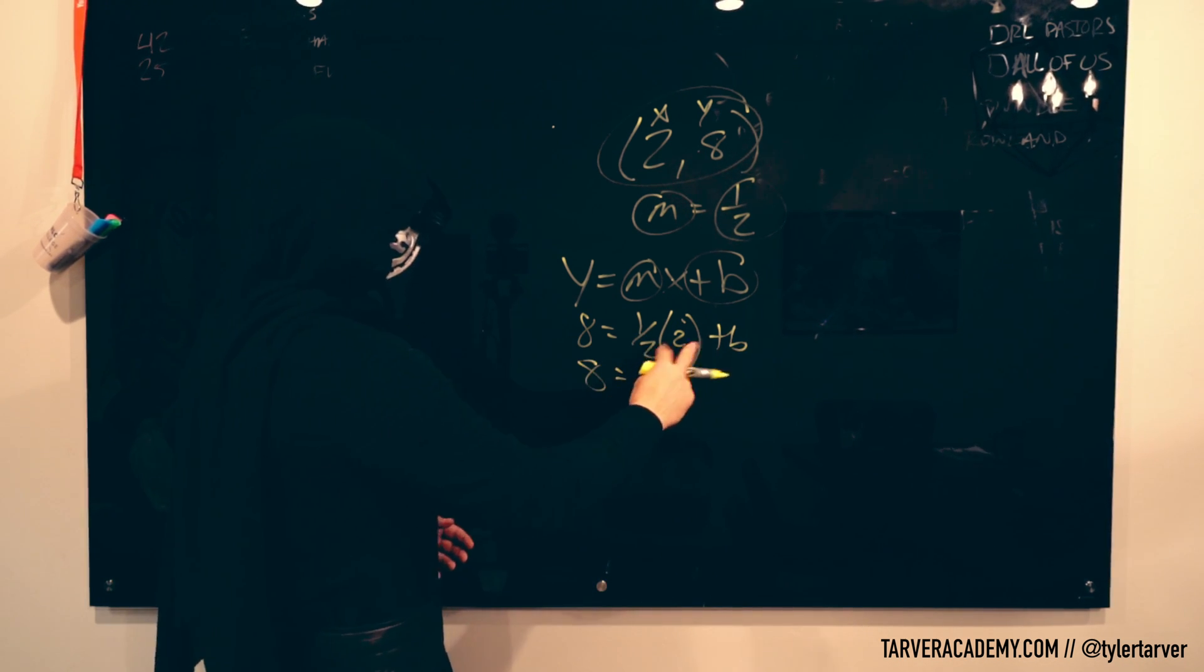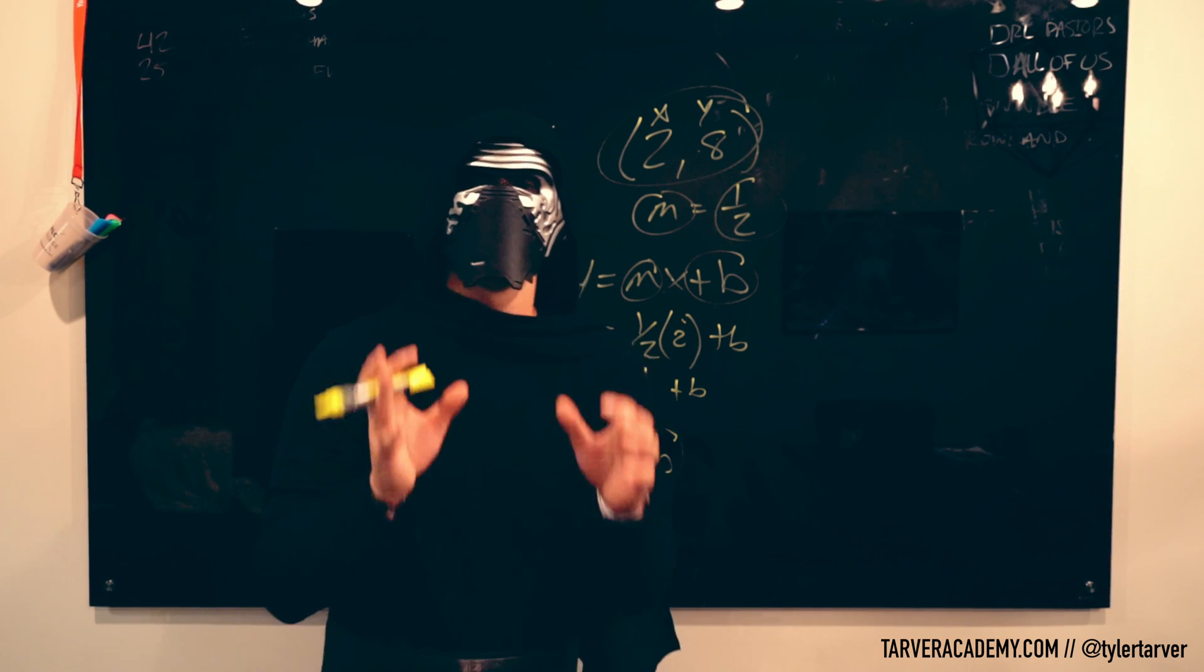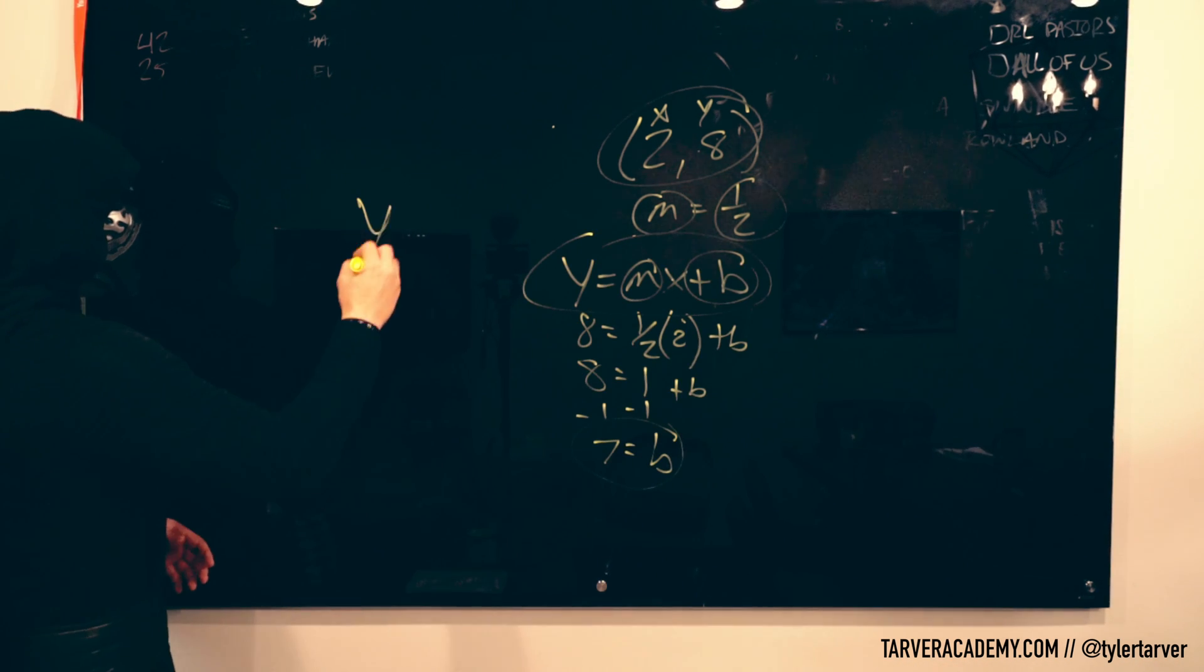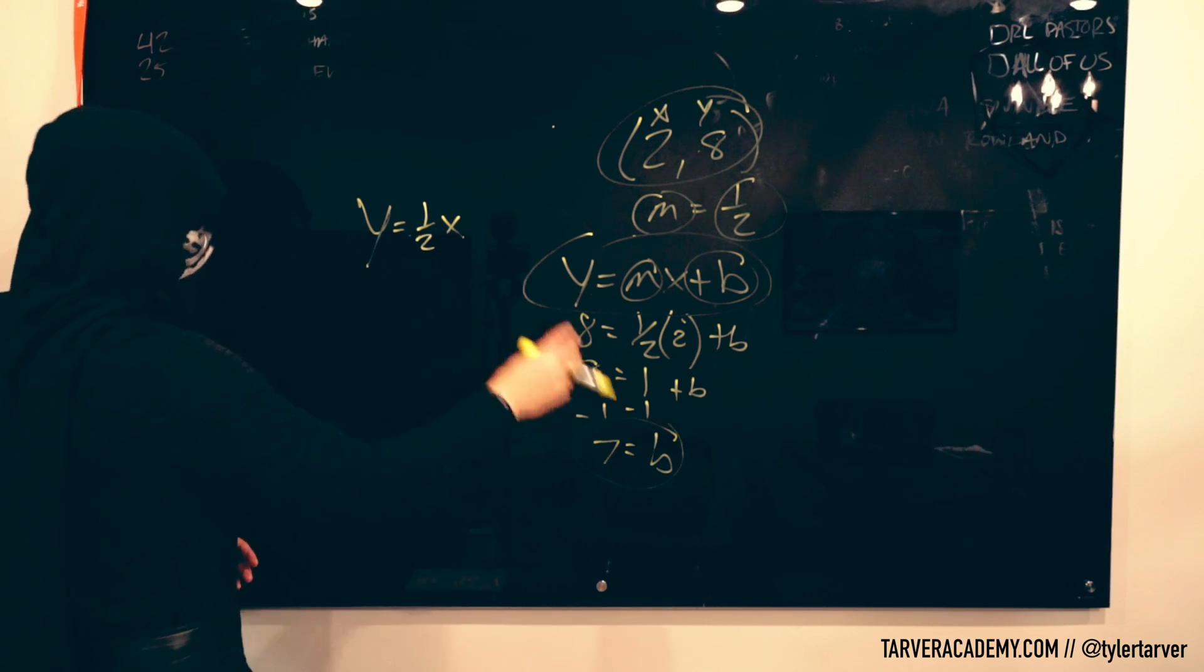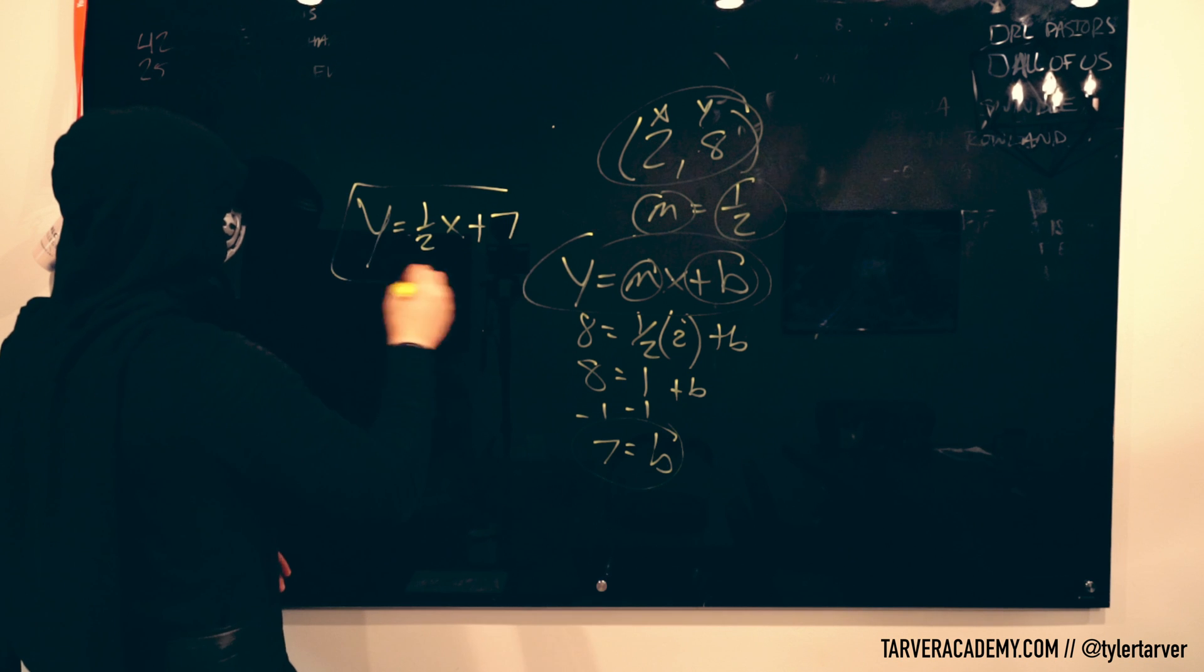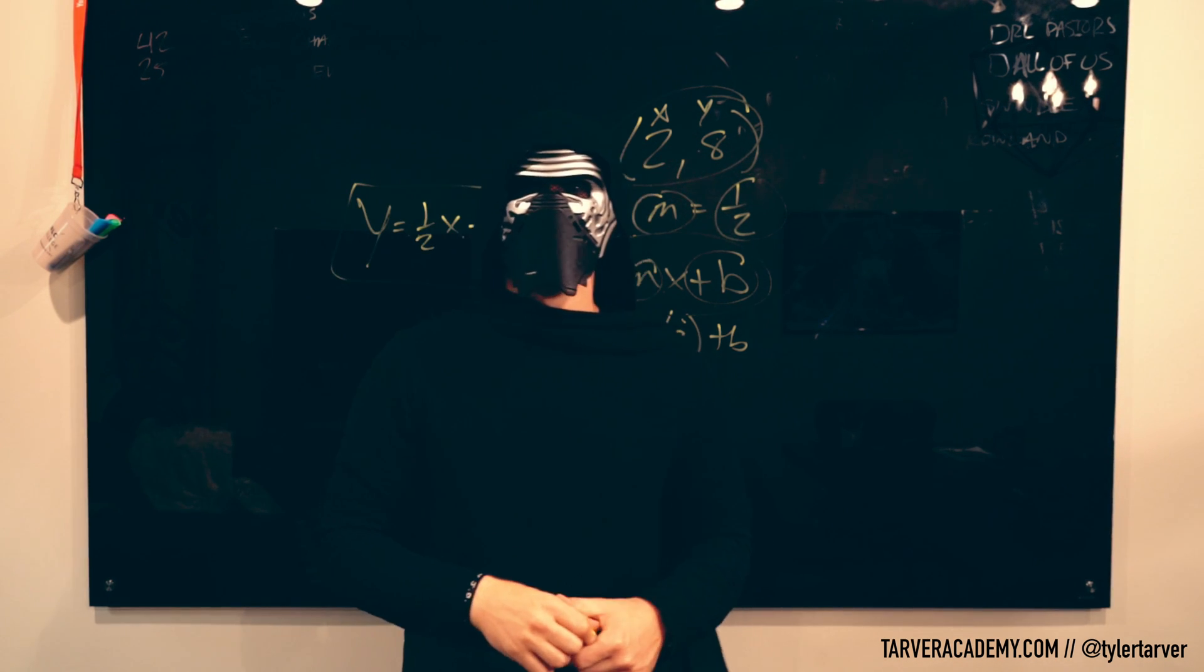I'm just going to put b in there and solve for that. So one half times two is one. And then I subtract the one to this side. Seven is my b. Now you're not done. You've got to do the final step and that's put it in the equation. Y equals one half x plus seven. And that is the equation in slope-intercept form.